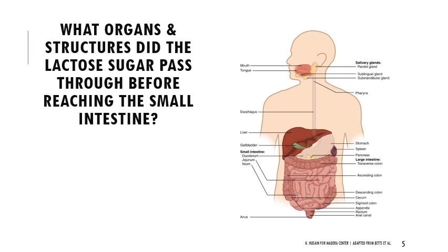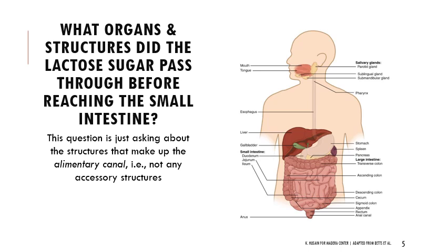For the first question, we're thinking about the digestion and absorption of lactose sugar in an infant — specifically, what organs and structures did the lactose sugar pass through before reaching the small intestine. Lactose is a small disaccharide, and this question is basically asking about the structures of the alimentary canal — where food actually passes through versus accessory structures. We're not thinking about the salivary glands, liver, or gallbladder. It would pass through the mouth, the pharynx in the throat, the esophagus, and the stomach before finally reaching the small intestine.